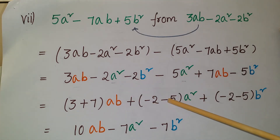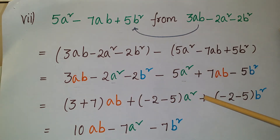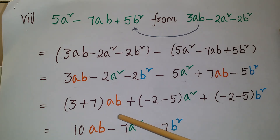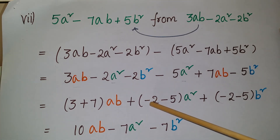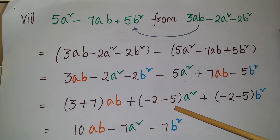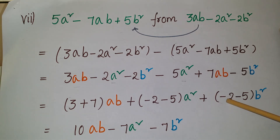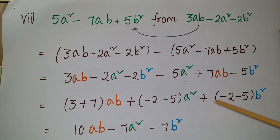And b squared terms: minus 2 minus 5 into b squared. So 3 plus 7 is 10ab. Then minus 2 minus 5 is minus 7, so plus into minus gives minus 7a squared. Similarly minus 2 minus 5 is minus 7, so the result is minus 7b squared. The final answer is 10ab minus 7a squared minus 7b squared.